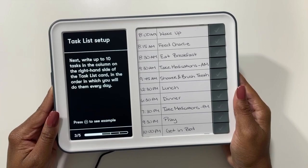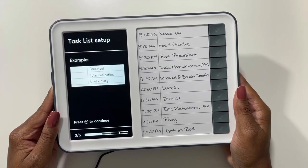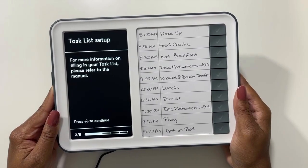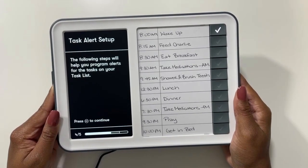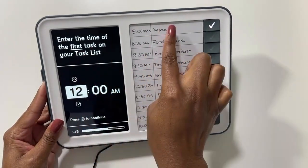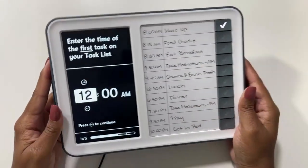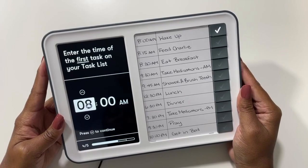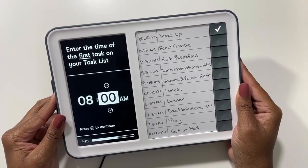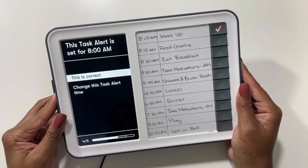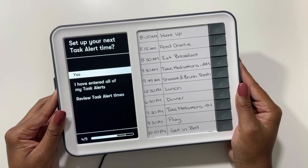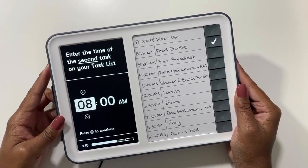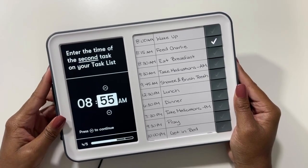These next prompts will guide you through what we just did. Now we want to enter the time of our first task by using the arrows and hitting OK once we get to our time. Then we will repeat the process until all of our tasks have been added to the device.